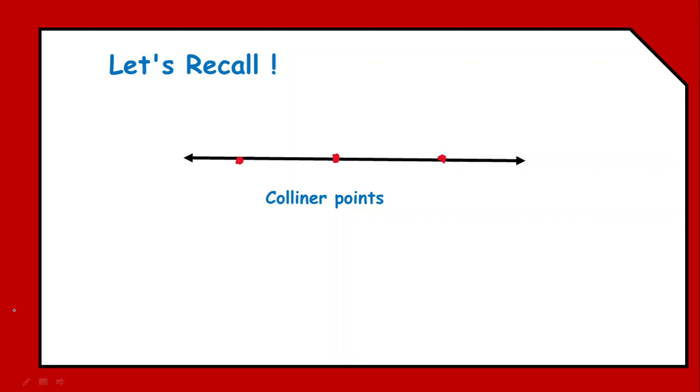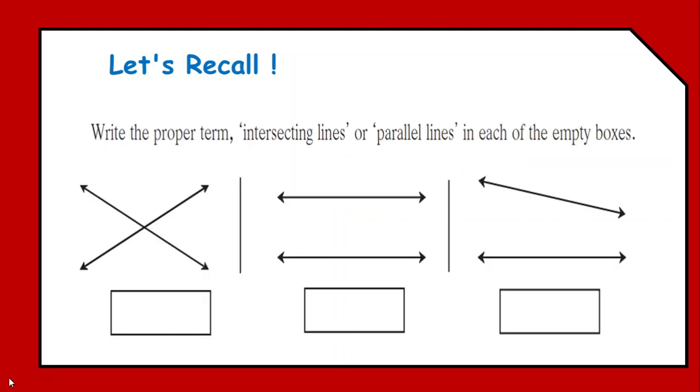Then, next we have a let's recall part. Here, we are supposed to implement the things which we learned. In the figures, there are certain pair of lines provided. And, what we need to do is we need to label them. In the first figure, the two lines are meeting each other at a single point. So, they will be termed as intersecting lines. In the next figure, we have the two lines which never meet, which are not meeting in the given plane. And, as well, if you extend them beyond the limits, then too they are not supposed to meet.